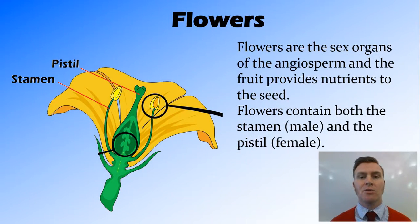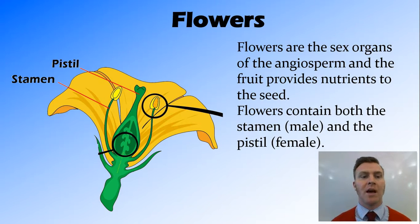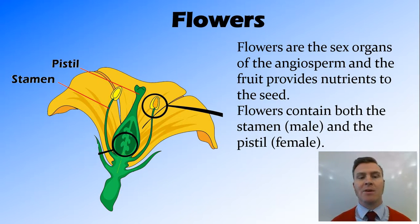There are two main parts in the flower, the flower being the reproductive organ of the plant. We have the pistil, which is in the centre, and that is the female component. And we have the stamen, which is generally around the pistil, which is the male component.